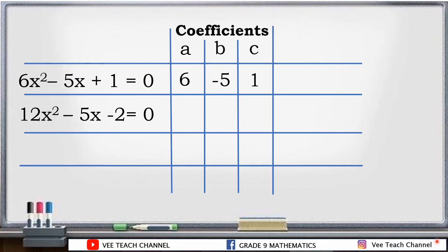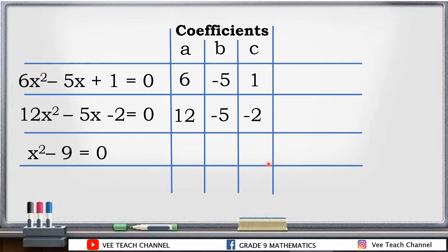How about the second equation: 12x squared minus 5x minus 2 is equal to 0? Our a here is 12, b is negative 5, and c is negative 2. In the third equation, x squared minus 9 is equal to 0, our a is 1. Since there is no linear term, we put 0 for b, and c is negative 9.